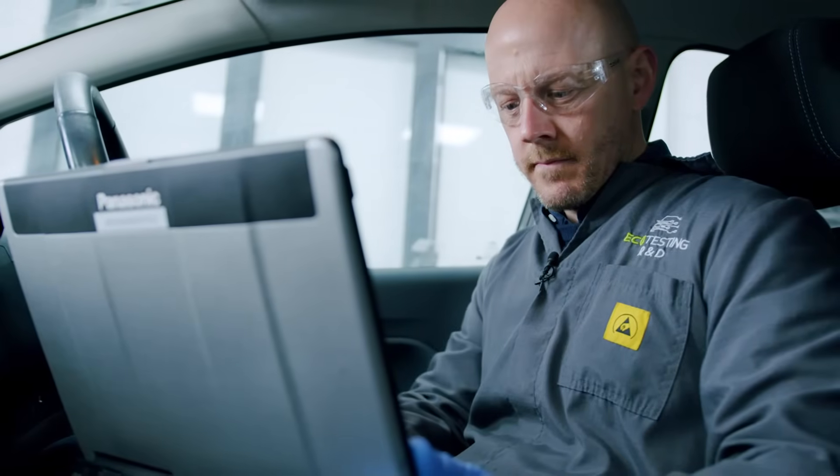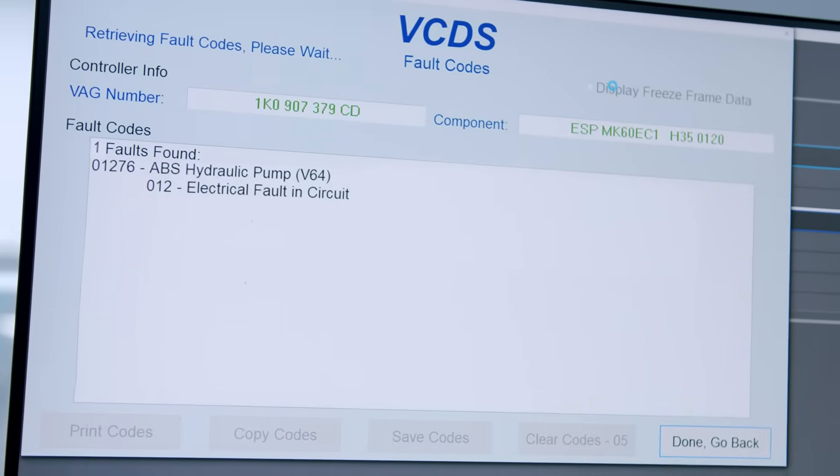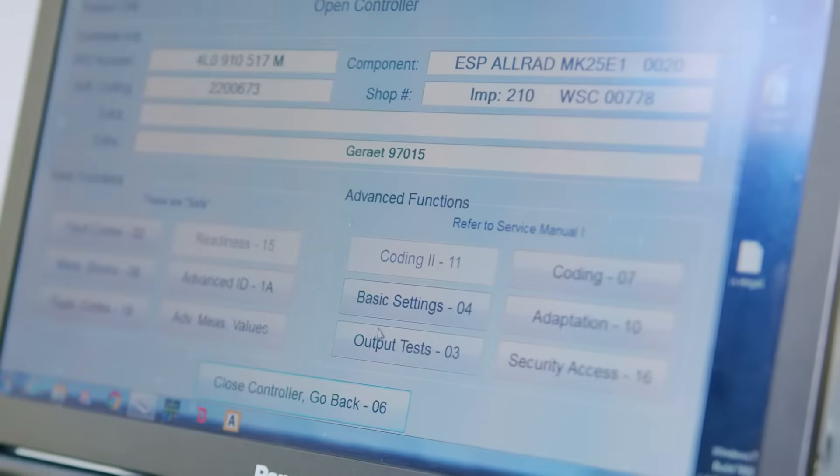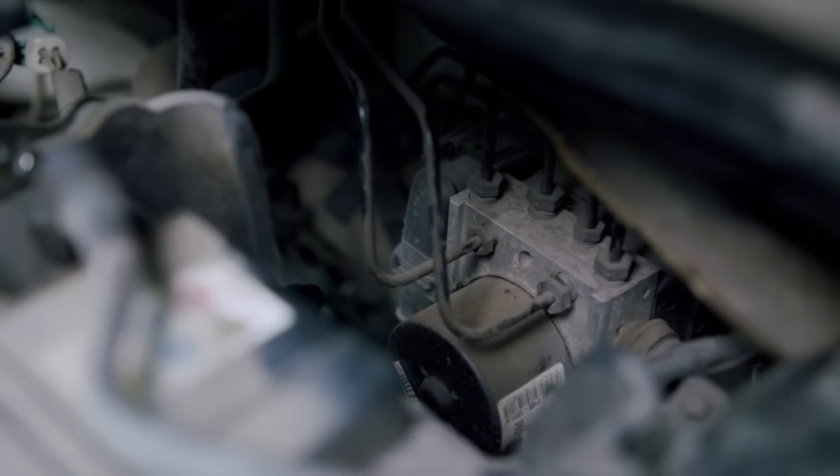Now use your diagnostic tool to connect the vehicle and scan the ABS for fault codes. If faults are stored in the memory, clear the codes and try to run a diagnostic output test for the pump motor. You should hear the pump running at this stage.